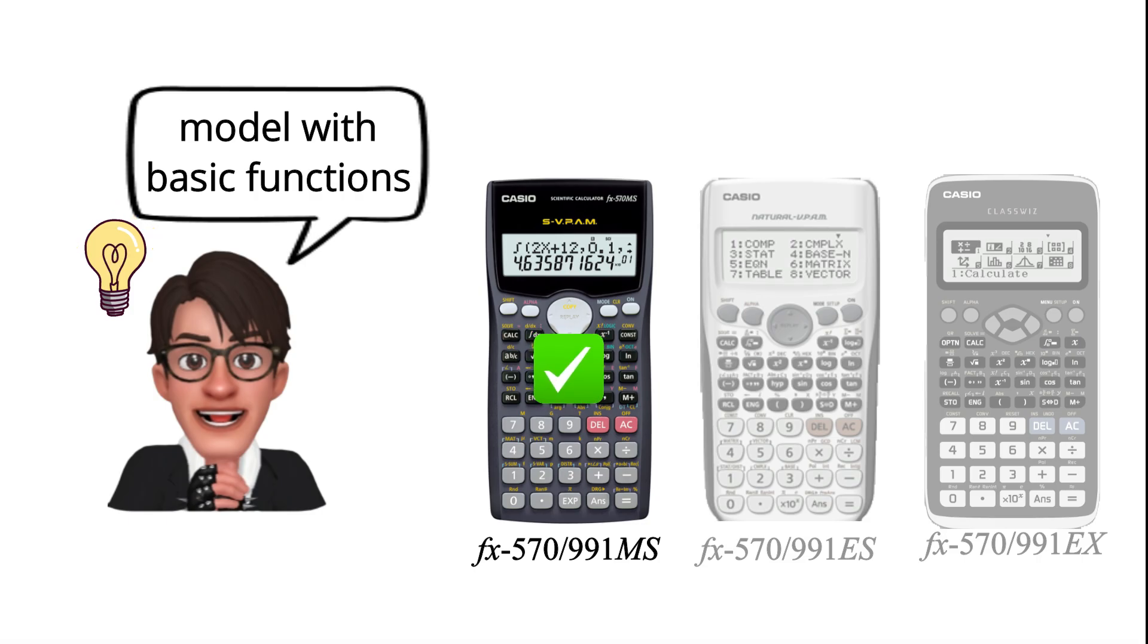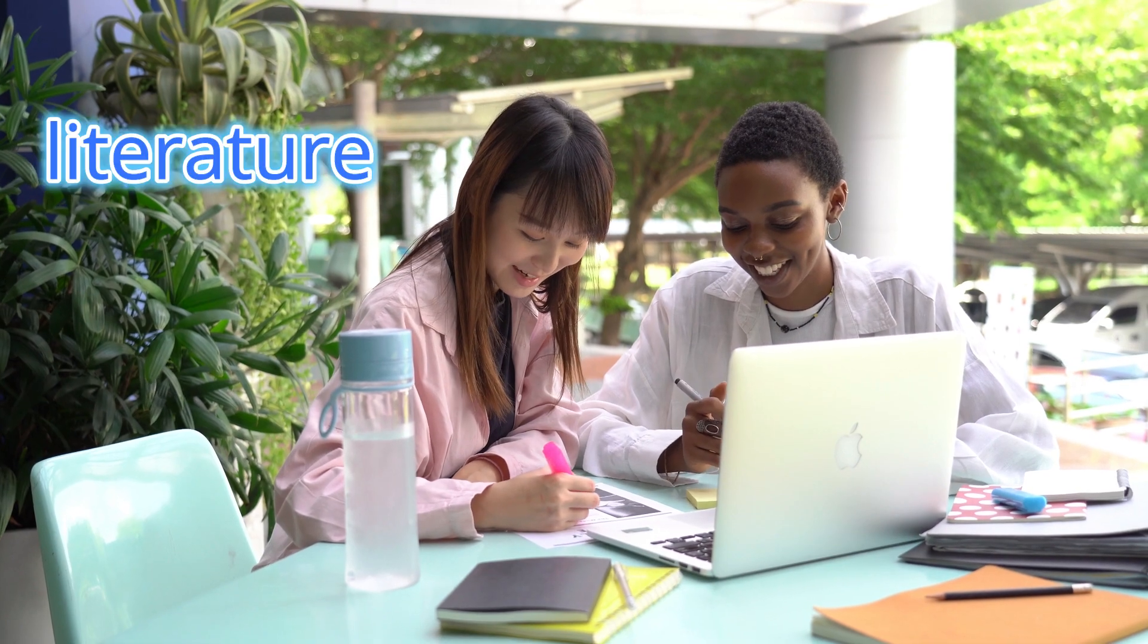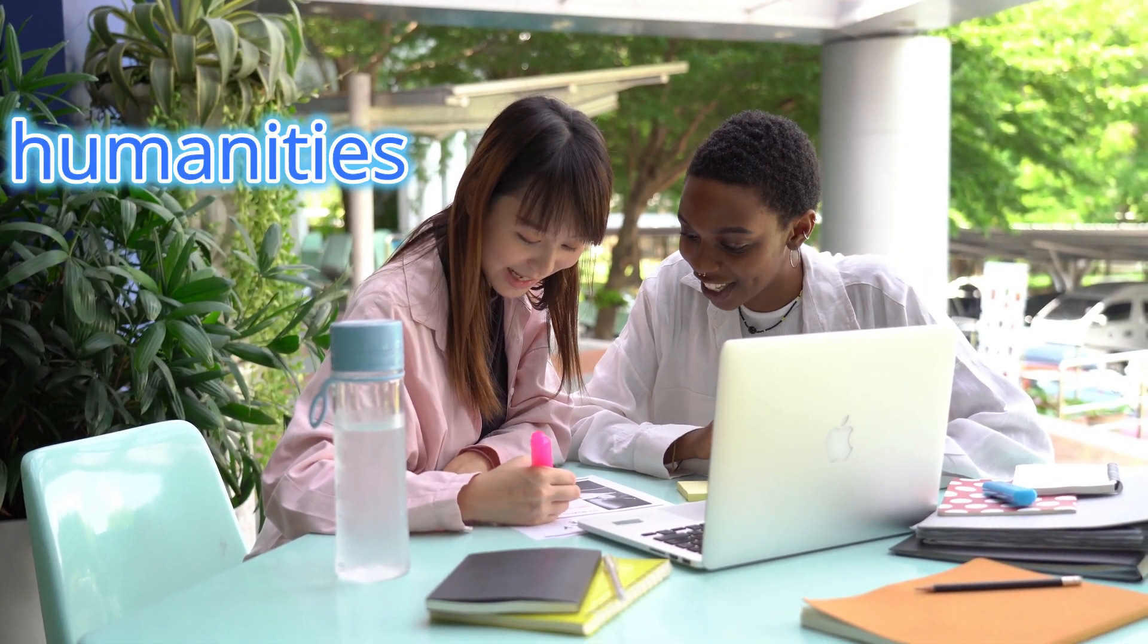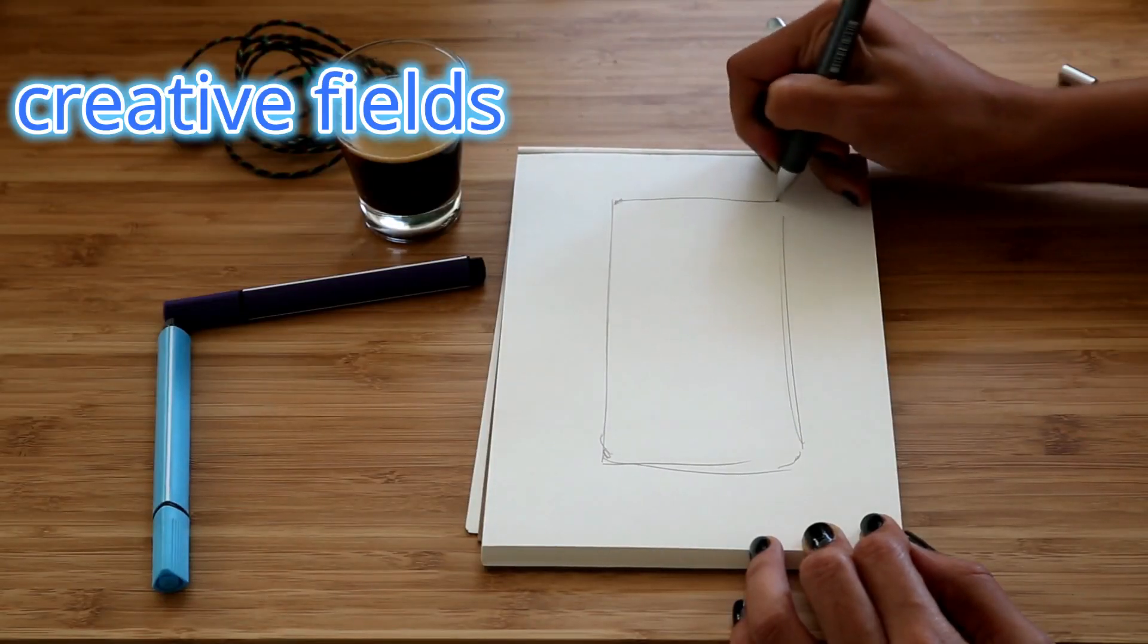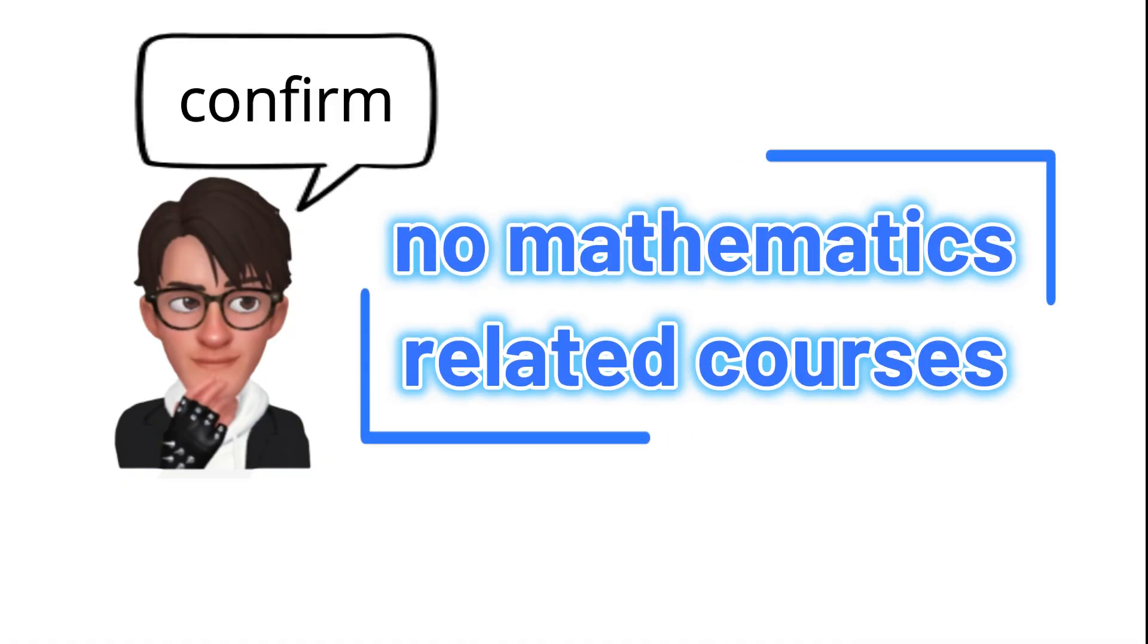If you're taking courses that don't involve any math skills at all, such as literature, languages and humanities, arts and creative fields, or law, you might want to check the program structure first. If you confirm that there are no math-related courses, you don't need to spend money on a calculator.